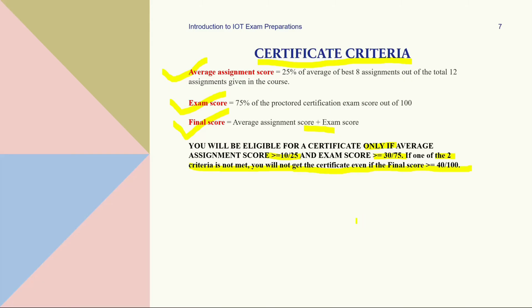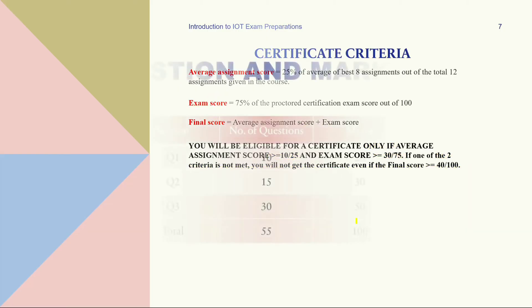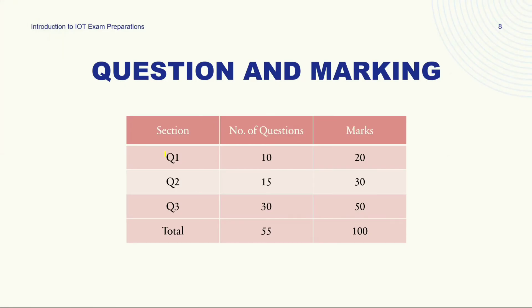Let's explore the distribution of questions and marking scheme. The exam is divided into three sections. Section 1 consists of 10 questions, each carrying 2 marks, assessing foundational concepts and principles of IoT. Section 2 comprises 15 questions, each carrying 2 marks, delving deeper into specific topics and applications. Section 3 contains 30 questions, each carrying 1.5 marks, covering a wide range of topics and testing comprehensive knowledge and problem-solving abilities. Allocate your time wisely considering the mark distribution in each section.